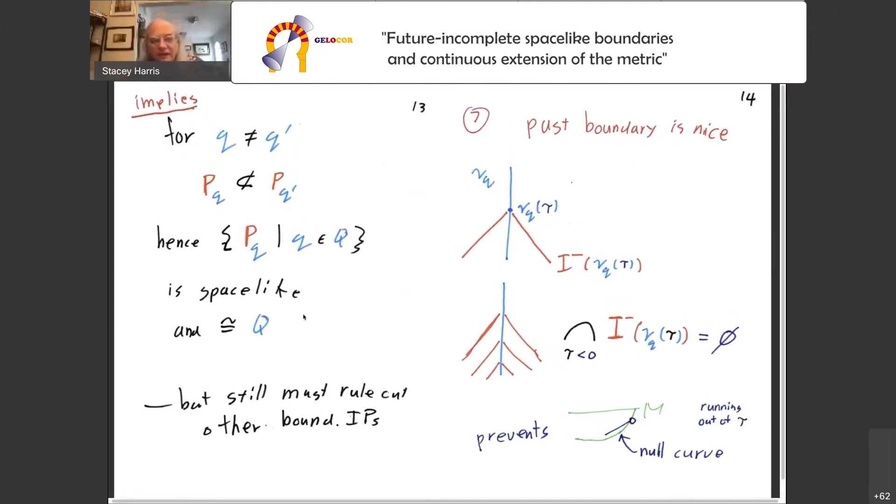Now, the importance of that assumption is this gives me that if for any two points q and q prime in my quotient space, the IPs generated are going to be different. In particular, p_q will not be a subset of p_q prime. And that's what I need in order to conclude that all these p_q's form a spacelike portion of the boundary. At the moment, all I can say is it's a spacelike portion of the boundary, and furthermore, I can also say it's homeomorphic to Q. In fact, it's diffeomorphic to Q using the future chronological topology. But at the moment, all we can say is it's a portion of the future boundary. We still have to rule out that there are no other boundary IPs.